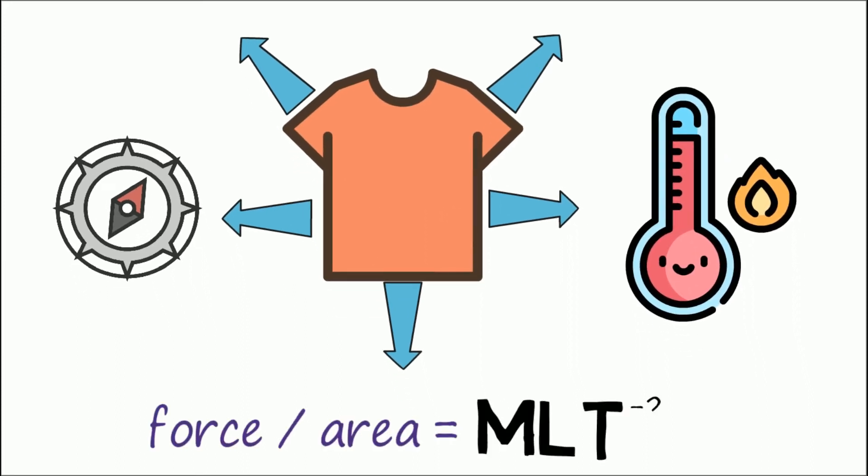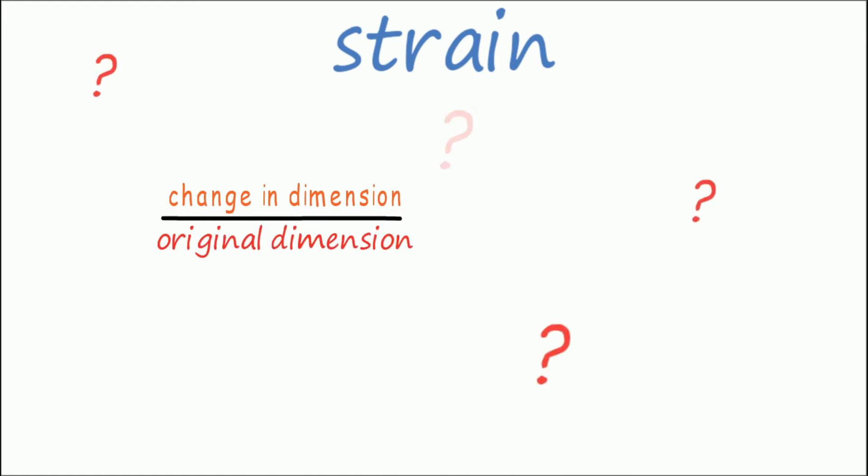So the expression of stress is force per unit area. Now let's move on to strain, which can be defined as the change in dimension upon original dimension.